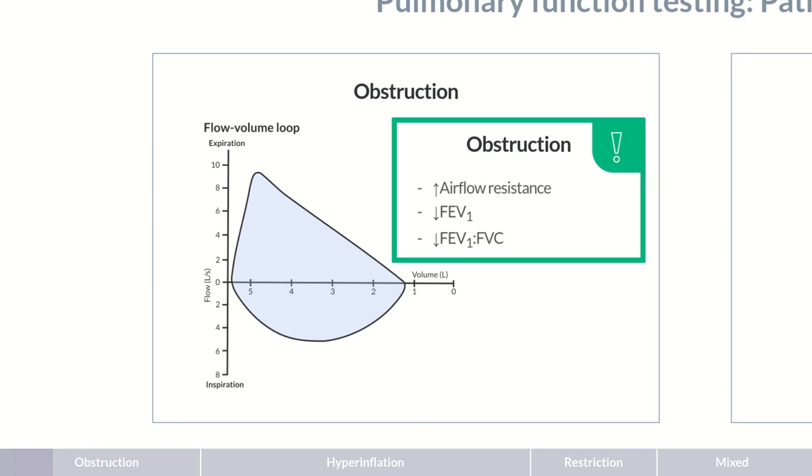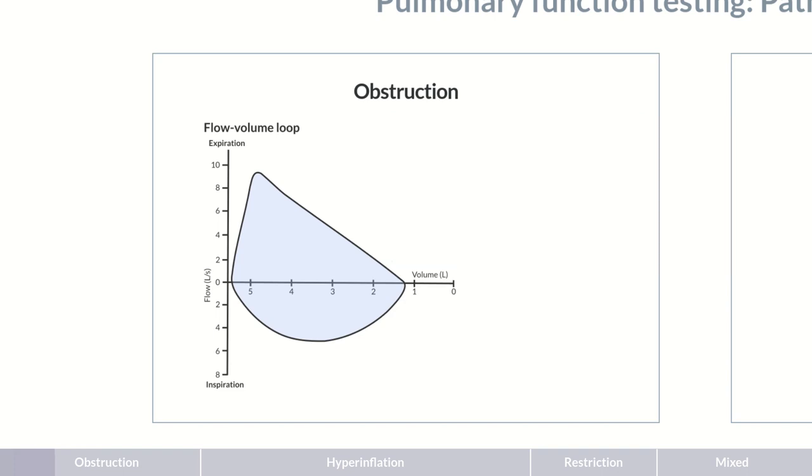Airflow is depicted in the diagram on the y-axis, with obstruction indenting the curve. In sole obstruction, lung volumes and expansion on the x-axis remain unaltered. This results in the characteristic concave shape. The vital capacity, residual volume, and total lung capacity are within normal values in obstruction.